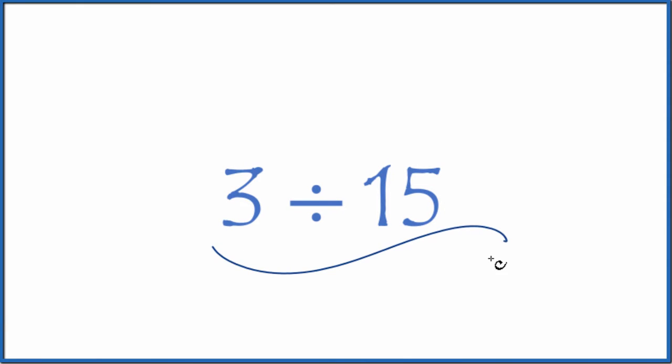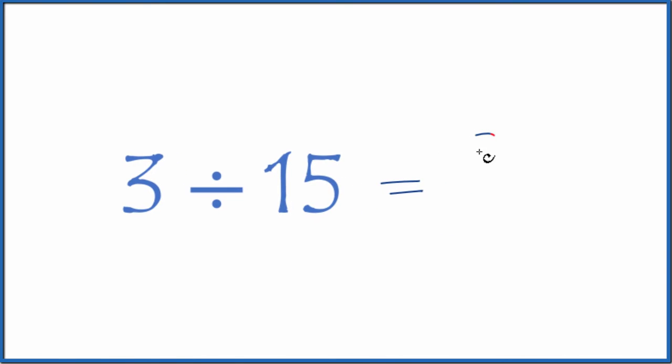If you need to divide 3 by 15, here's how you do it. First off, let's consider this a fraction, so it's just going to be 3 over 15. So 3 divided by 15, that's the same thing as the fraction 3 fifteenths.